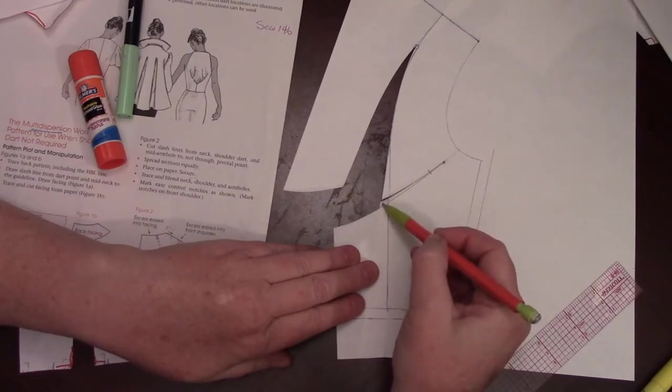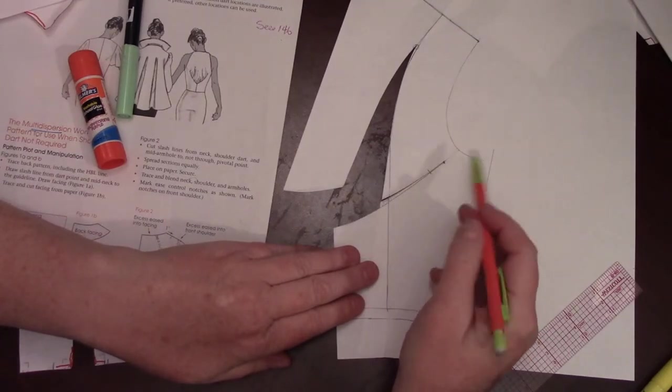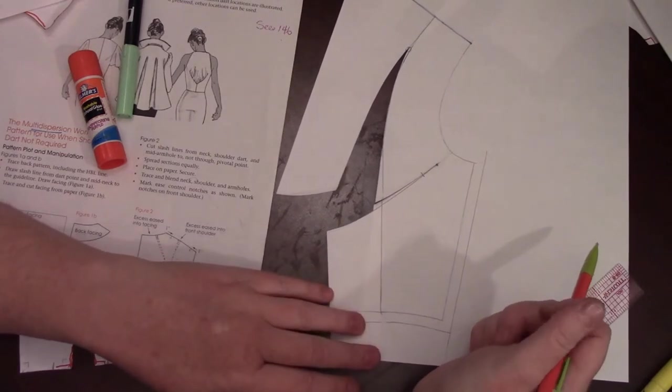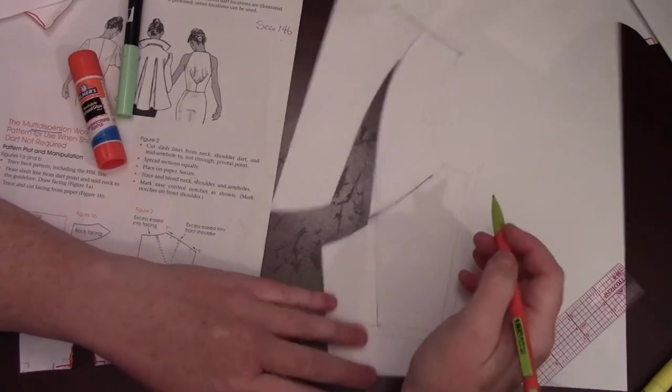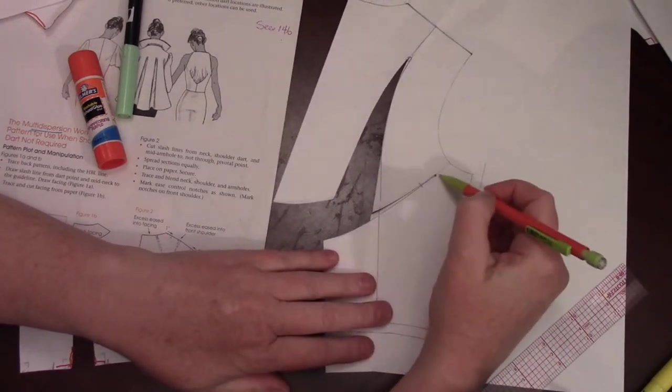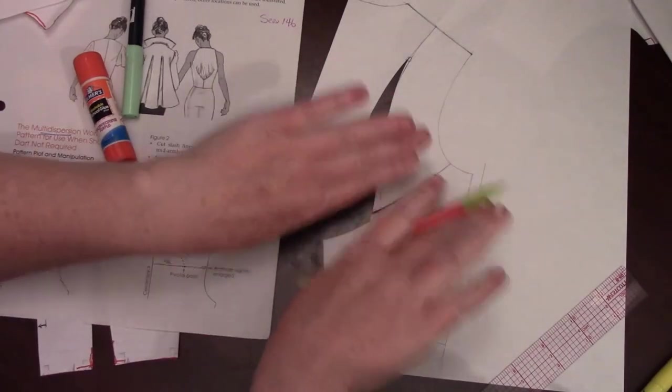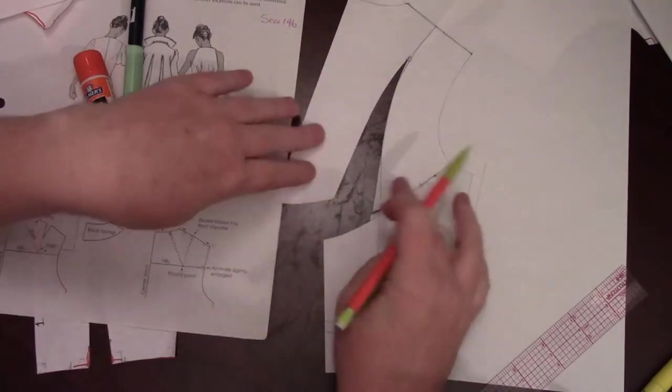You'll only have about a sixteenth of an inch of seam allowance along here. And, if you're home sewing it, you could probably make that work. But, if you were doing this in a factory, you would have to actually separate it right there on that line so that you get a fourth of an inch of seam allowance on both sides.